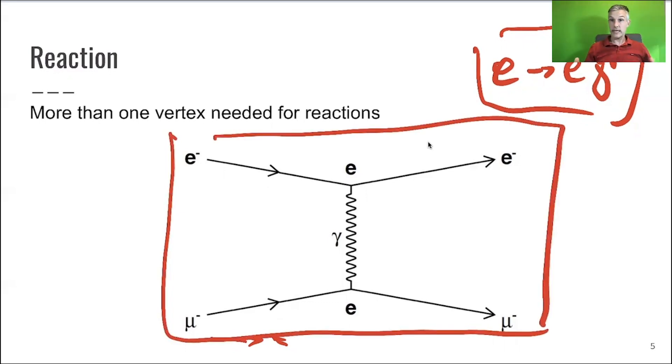We'll see how to do this technically later on, but hopefully you have a first impression. Let's label this now very quickly. So you have an incoming particle, a second incoming particle, outgoing particles, and an exchange particle. So this exchange particle is a photon, and that's two vertices in this diagram.